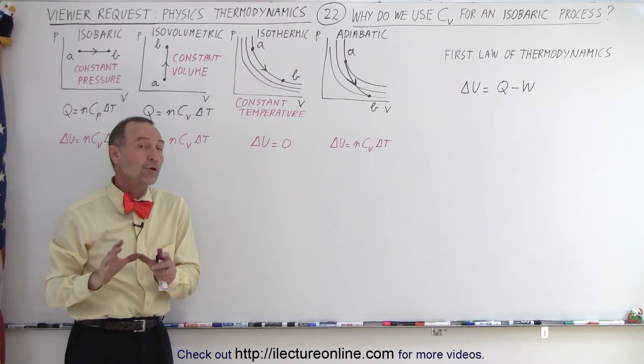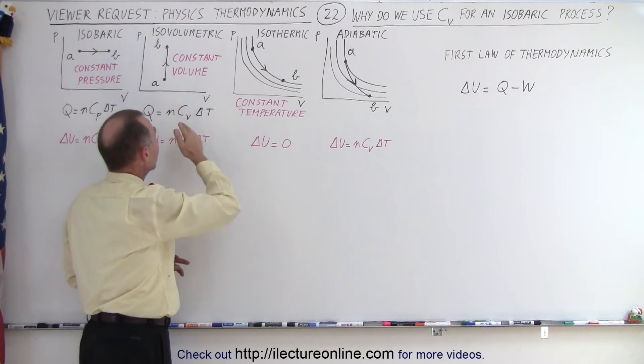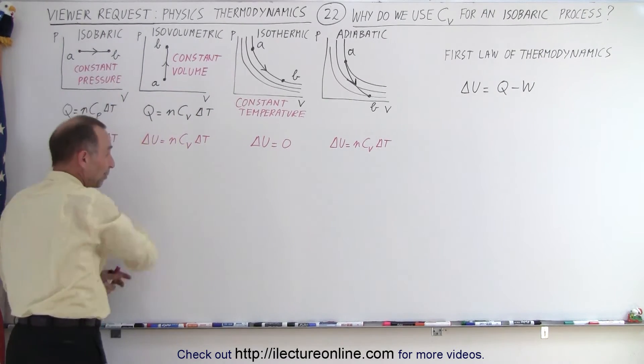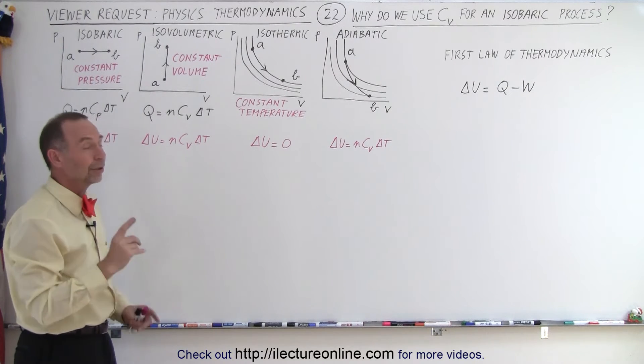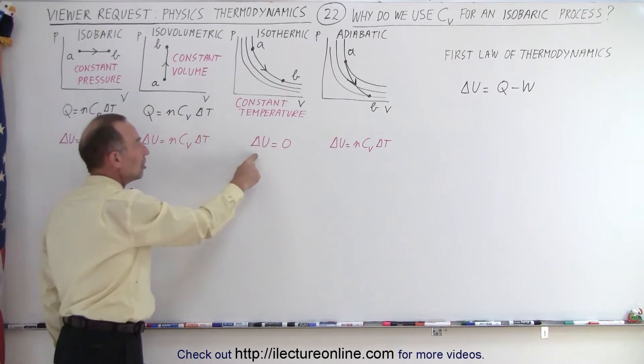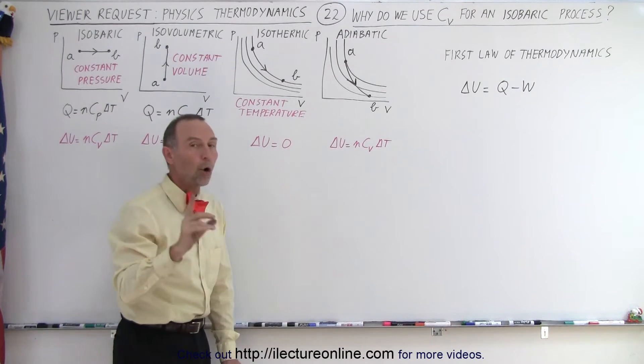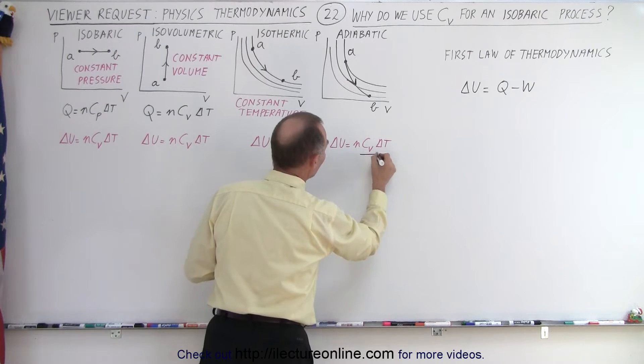But then sometimes they see me use C sub V in an isovolumetric process, no, not in an isobaric process. And they go, well, I'm confused, why is that happening? Well, it turns out we do not use C sub V to calculate Q, but when it comes to calculating the change in internal energy, we always use, and notice, we always use C sub V.